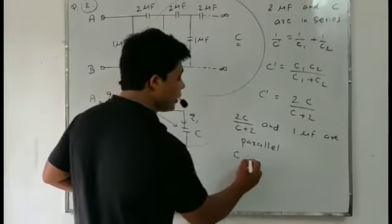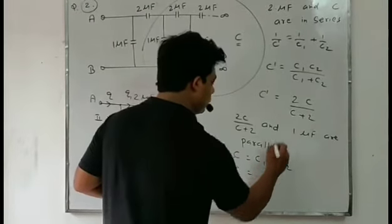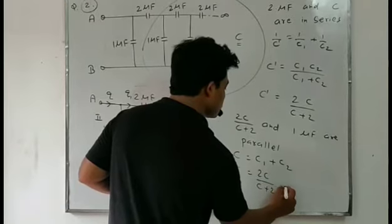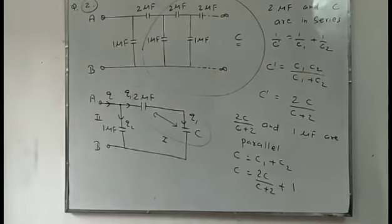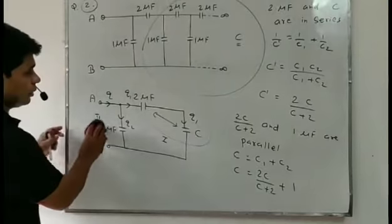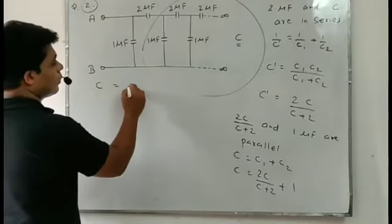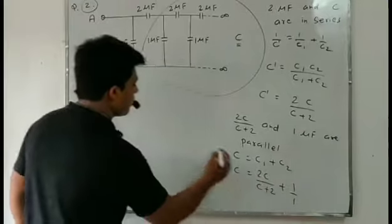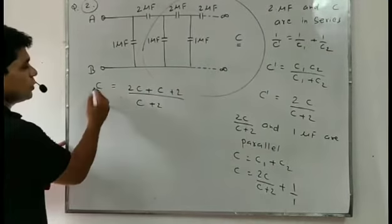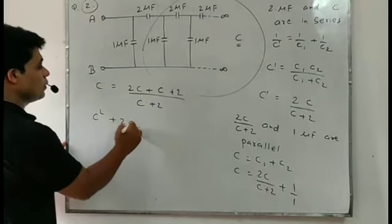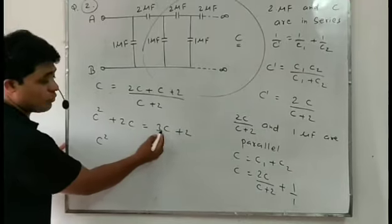The formula for parallel combination gives equivalent capacitance C = C1 + C2. So C = 2C/(C+2) + 1. Taking the LCM, the LCM will be C+2. So C·(C+2) = 2C + (C+2), which gives C² + 2C = 2C + C + 2. Expanding and simplifying: C² = 3C + 2 − 2C, so C² − 3C + 2 = 0... rearranging gives C² − 3C − 2 = 0.